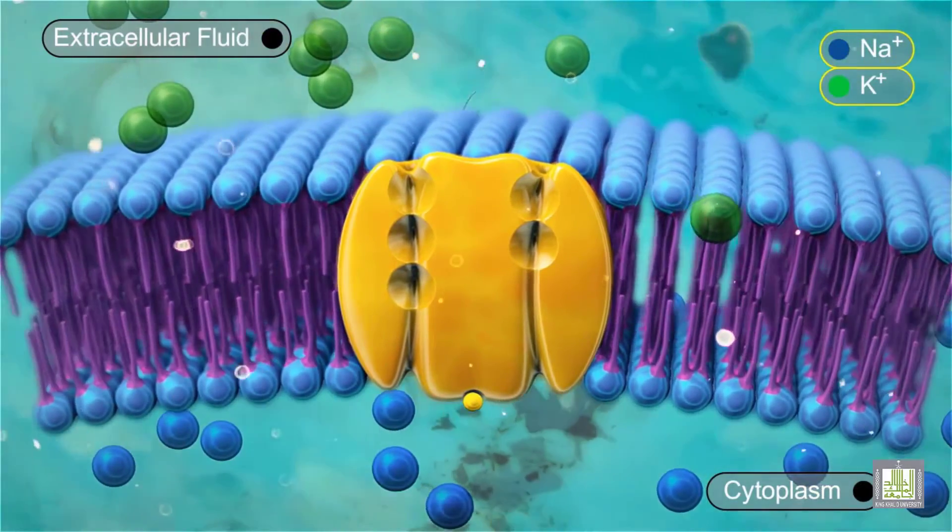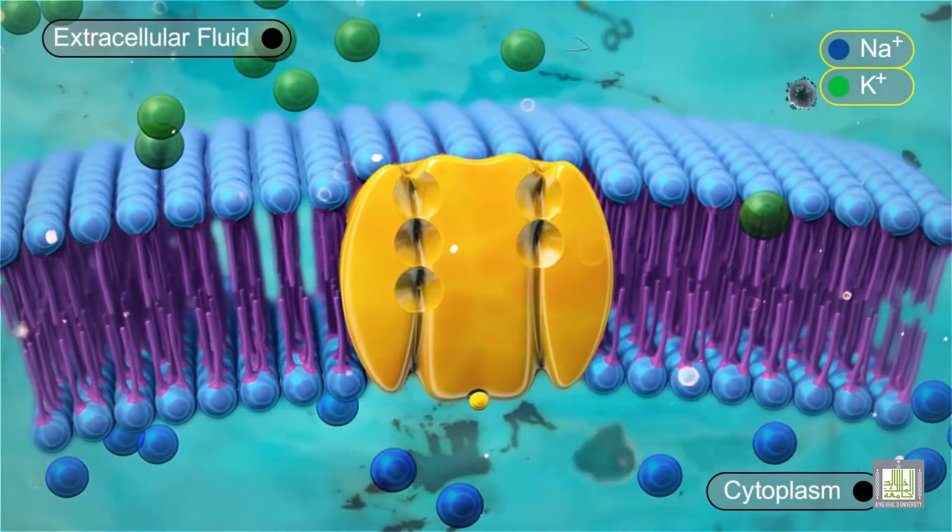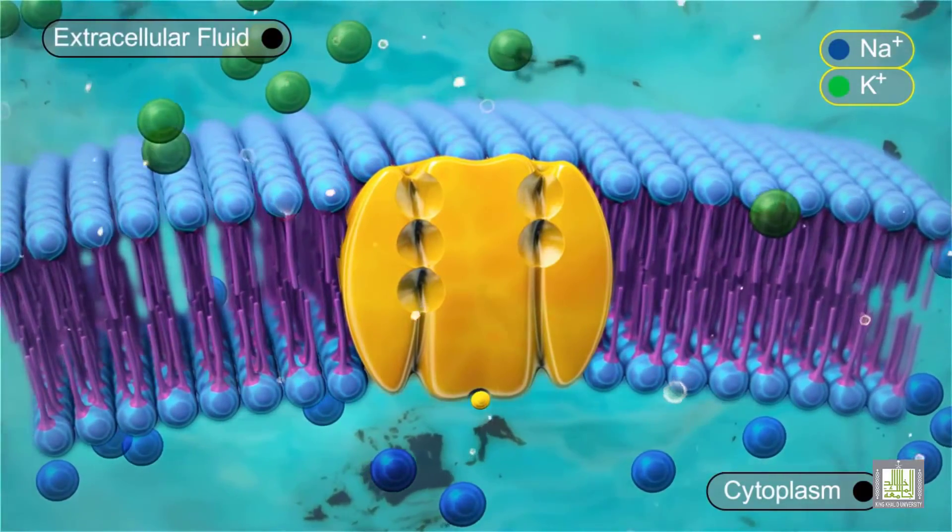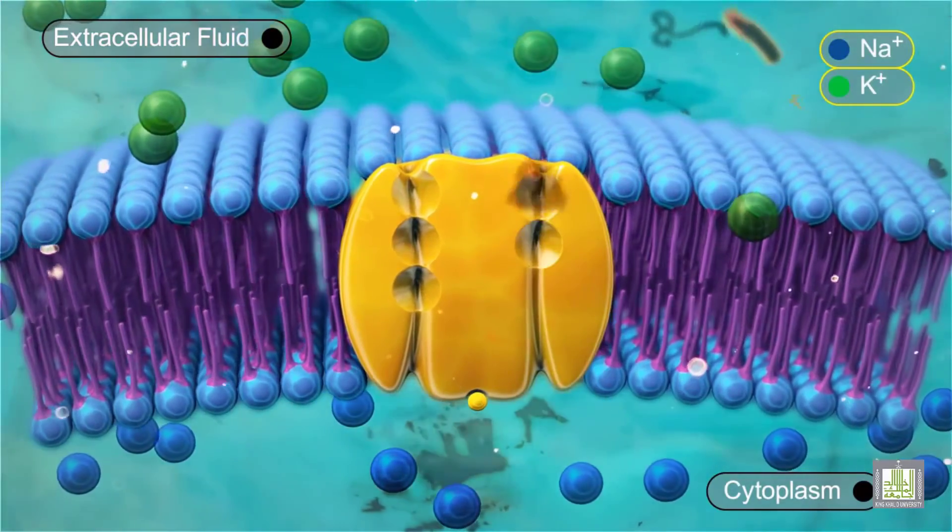In its new conformation, the carrier protein can now bind potassium ions on the outside of the cell. Two potassium ions move into the carrier protein from the outside of the cell membrane.